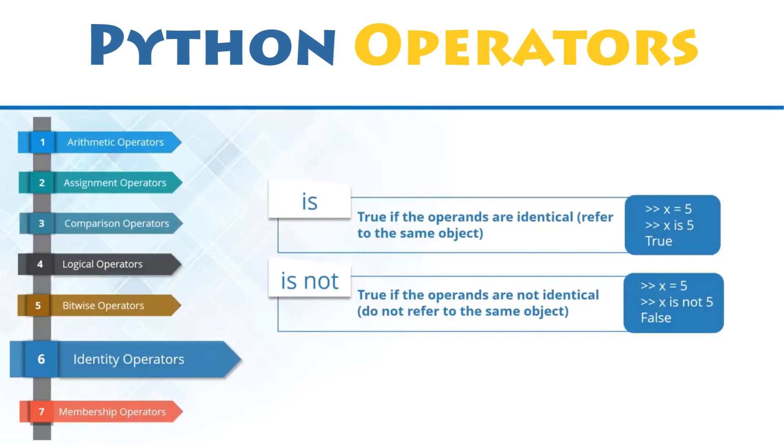Identity operators: is and is not are used to compare two values or variables, not if they are equal, but if they are actually the same object located on the same part of the memory. Hence, the two variables that are equal does not necessarily imply that they are identical with the same identity.